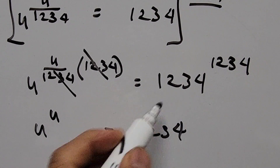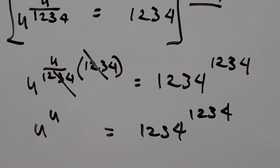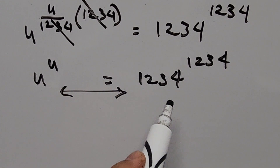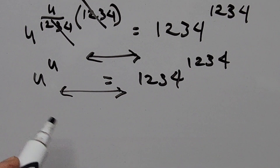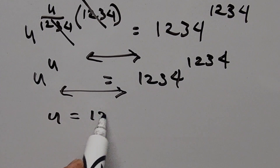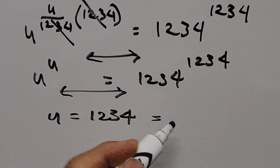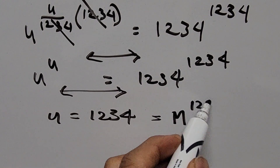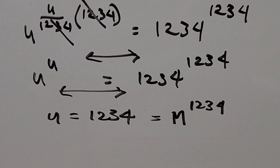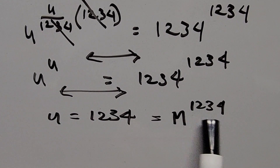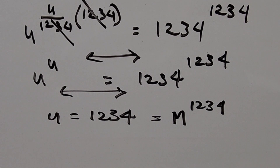Now it's clear that we can equate the base and exponent of each side. This means u = 1234. Since u was defined as m^(1234), we have m^(1234) = 1234. Solving for m, we raise both sides to the reciprocal exponent 1/1234.